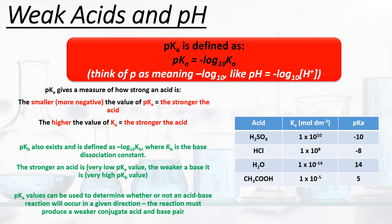Looking at some examples: comparing sulfuric acid (Ka ≈ 1 × 10¹⁰) versus ethanoic acid (Ka ≈ 1 × 10⁻⁵), there's a huge difference — sulfuric acid is clearly a much stronger acid. This translates to pKa: the pKa of sulfuric acid is about −10, and the pKa of ethanoic acid is 5. So the bigger the value of Ka, the stronger the acid; the smaller or more negative the value of pKa, the stronger the acid.